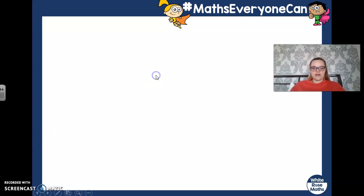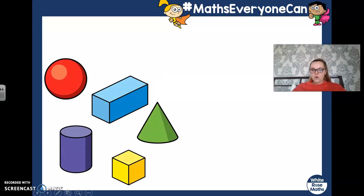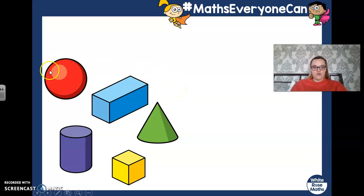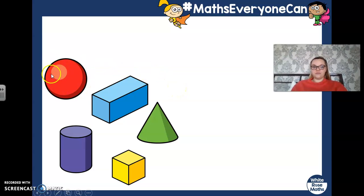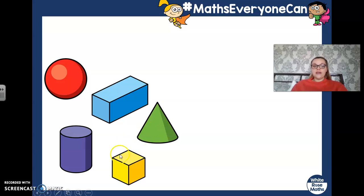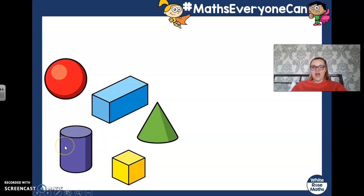Right. So let's have a look. Today, we're going to be looking at some 3D shapes. So here we've got a sphere. Here we've got a cuboid. Here we have a cone. Here we have a cube. And here we have a cylinder.